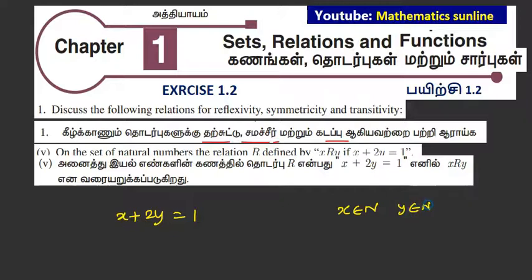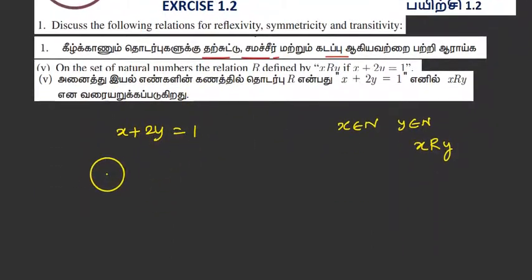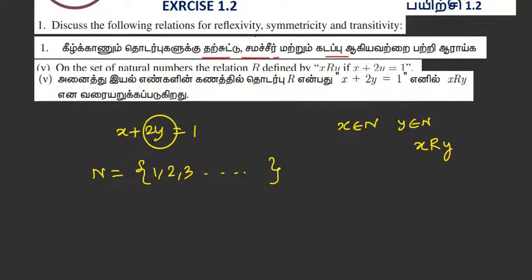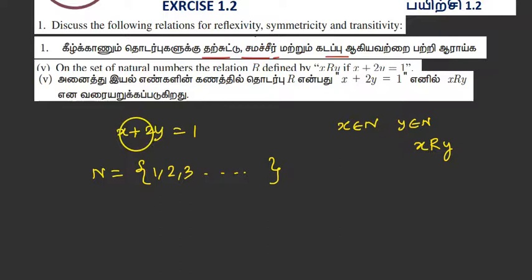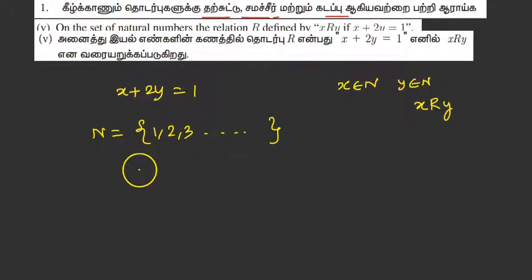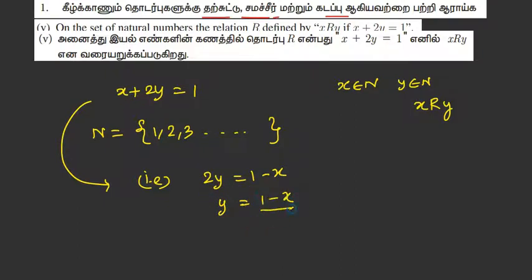y belongs to N. From the equation, we can solve: 2y is equal to 1 minus x, so y is equal to (1 minus x) divided by 2. Now, for x belonging to natural numbers, this result is not a positive natural number — it is not possible to satisfy this equation.